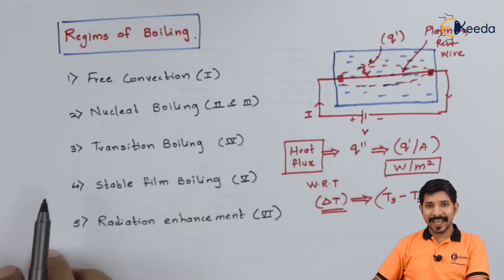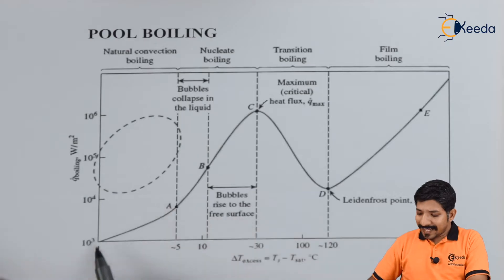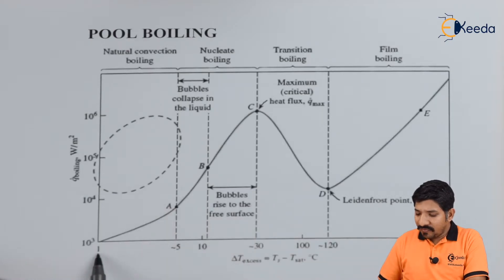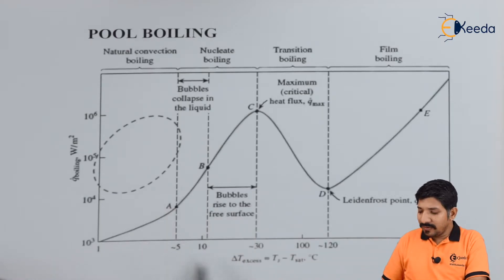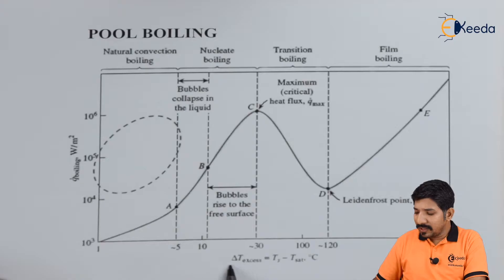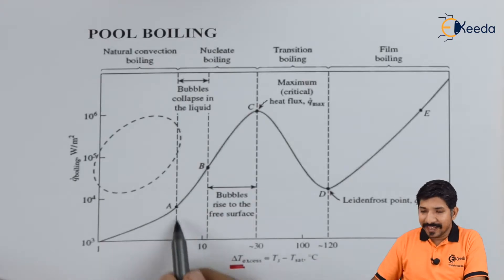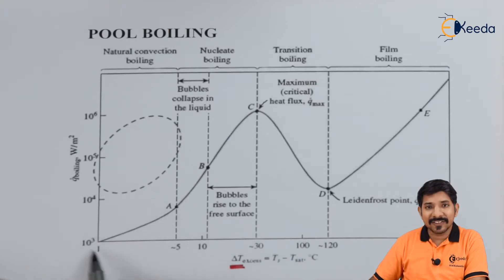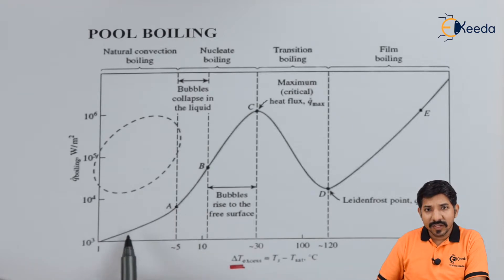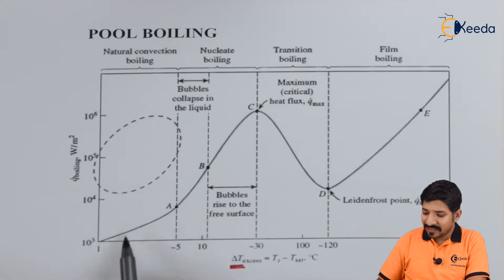Looking at the diagram, from ΔT equal to 1 to 5 degrees Celsius, the heat transfer rate is entirely natural. There is no phase change — all the heat transfer is by free convection itself.